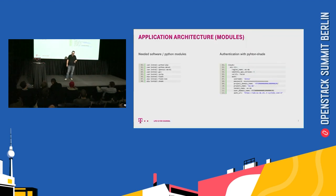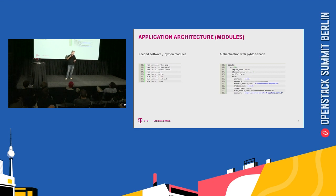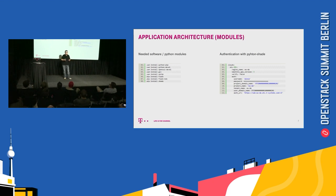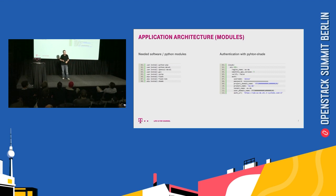How does the application look? We need a bit of Python. To talk to the cloud, Python Shade is the weapon of choice. To interact with the Alexa device, there is Flask, which is a very minimalist framework. And then there's Flask-Ask for the Alexa Skill Kit, which brings all the functions you need to interact with Alexa. For authentication to the cloud, there's a simple YAML file where you put your username, password, domain — all the things you need to interact with the cloud.